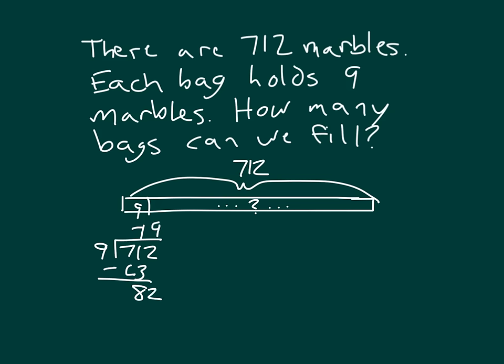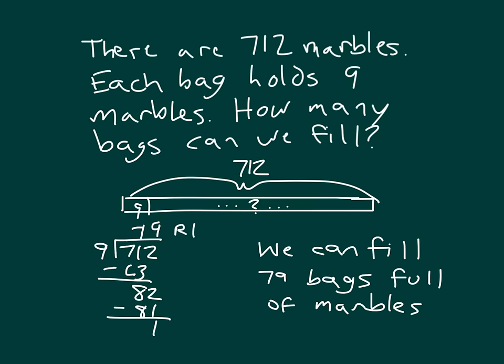82 divided by 9 is 9, because 9 times 9 is 81. And 82 minus 81 is 1. So we can fill 79 bags with 1 marble remaining. We can fill 79 bags full of marbles, meaning 9 within each of those bags. So when we don't know the number of groups, this is how our tape diagram will look.